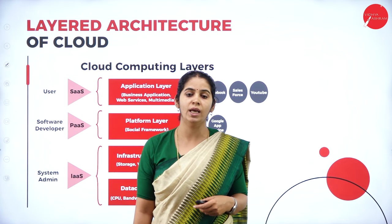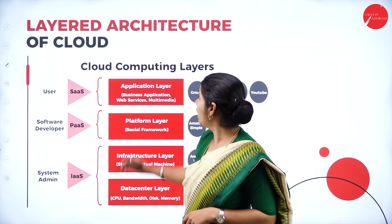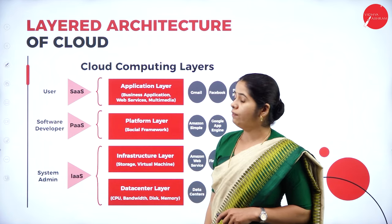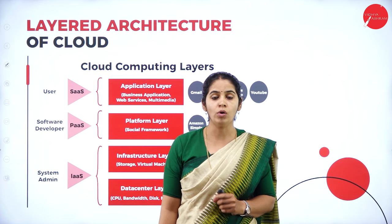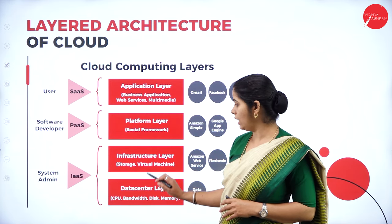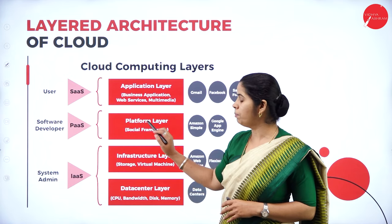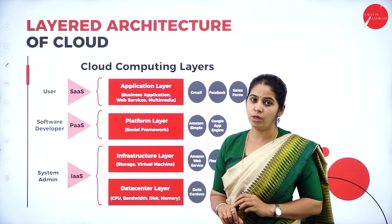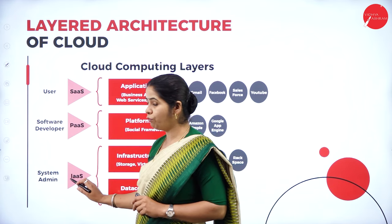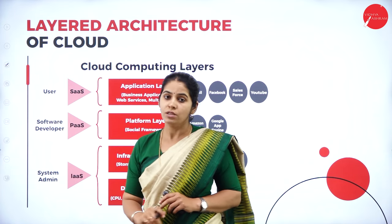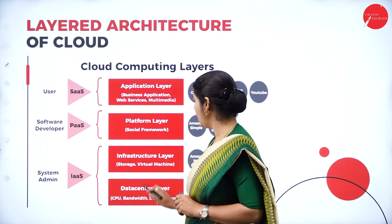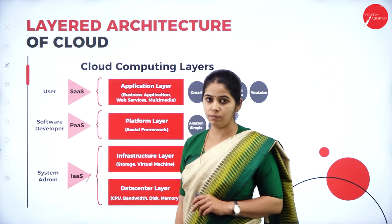Next topic is the layered architecture of cloud. We categorize cloud architecture into four main layers: data center layer, infrastructure layer, platform layer, and application layer. The data center and infrastructure layers together constitute IaaS, managed by a system administrator.